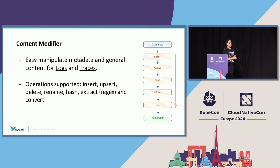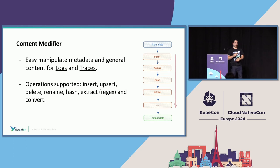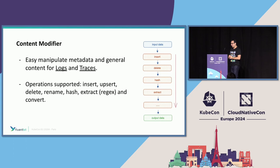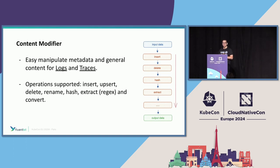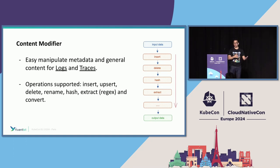We also have other internal changes on how to manage data serialization that I'll talk about in a few minutes. When thinking about how to modify data — because users always want to modify data for business needs — we said we have a bunch of filters: modify, modifier, grep, and about 20 or more, most of which overlap in functionality. So we are shipping one more to reduce complexity, called the content modifier. Of course, this is a processor, not a filter.